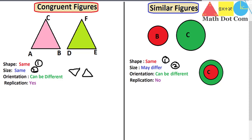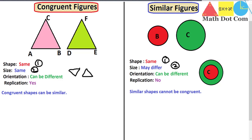In congruent figures they are exactly replicas of each other, but in similar figures there is no replication. One important thing to remember: congruent figures are also similar, but you cannot say that similar figures are congruent. Congruent shapes coincide and map perfectly, while similarity just refers to close resemblance but not quite the same. Keep this in mind.